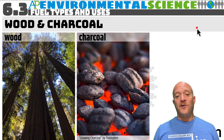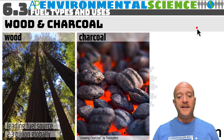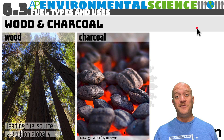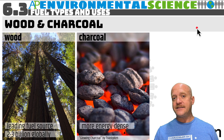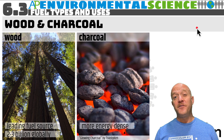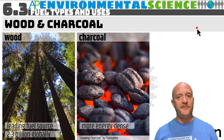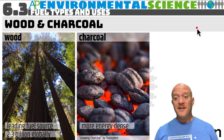Wood and charcoal are forms of biomass that are used as energy sources around the world. Wood is the leading energy source — between two and three million people use it globally. Charcoal is more energy dense; it's basically wood that's been heated under very low oxygen content in order to remove the water and volatile compounds found within it. You've likely used charcoal at a summer barbecue.